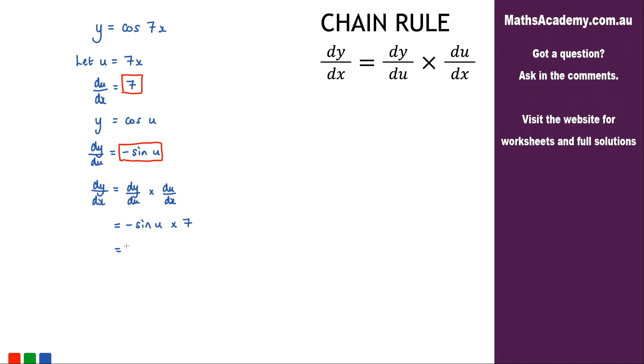We can simplify this a little bit. We've got negative 7 sine of u.